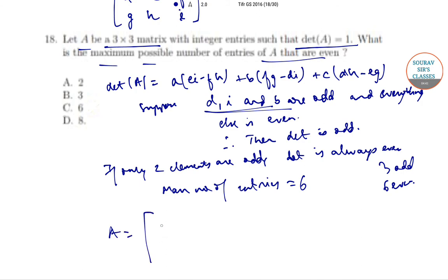A = [[0, 1, 0], [-1, 0, 0], [0, 0, 1]], where B = 1, D = -1, and I = 1, and rest all are 0. Then if we calculate this, we get det(A) = 1. So the correct option is option C.